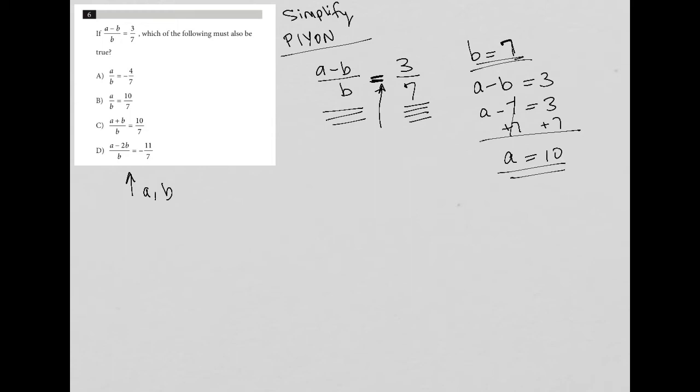So in this example, I'm not necessarily plugging my own number in. I'm using the information provided in the question in order to just determine what the numbers must be. So for me, at this stage, A is equal to 10, and B is equal to 7. So this is much more of a simplified type of strategy than a plug-in-your-own-number type of strategy.